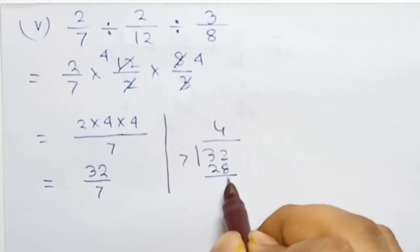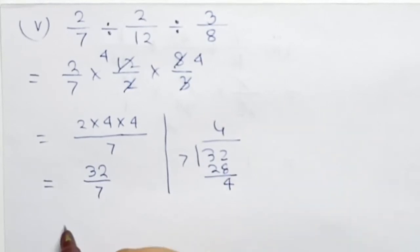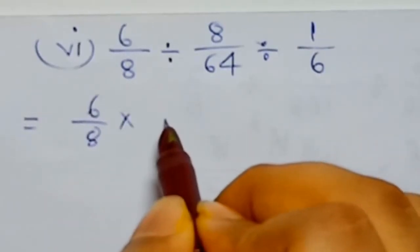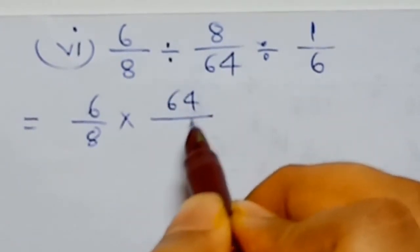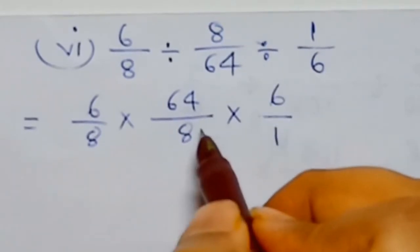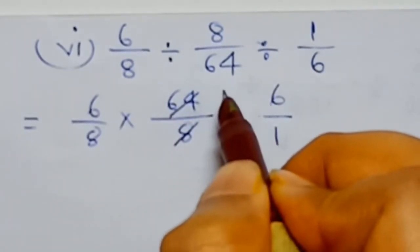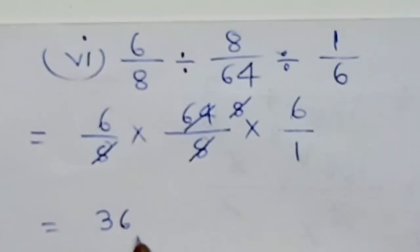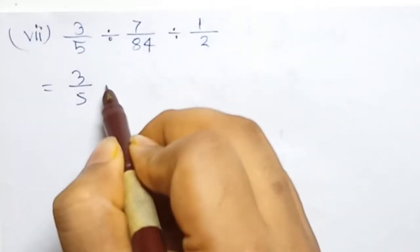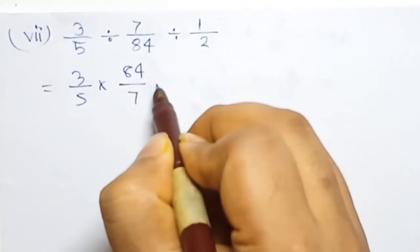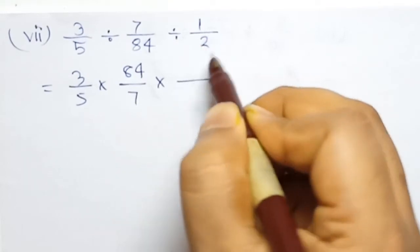Remainder is four, so finally the answer is 4 whole 4 by 7. Six by eight multiplied — reciprocal gives sixty-four by eight. Next, multiply reciprocal: six by one. So eight and sixty-four cancel — eight times one. Next, eight and eight cancel above, so six. Six into six equals thirty-six. Three by five: divide becomes multiplication — I have one.